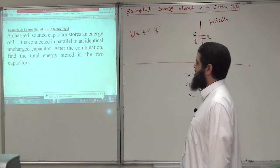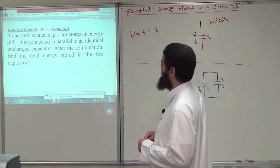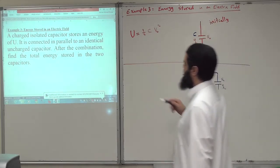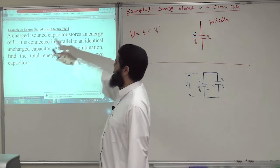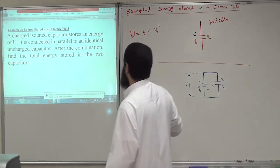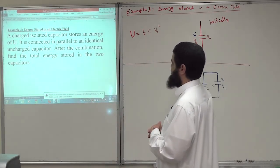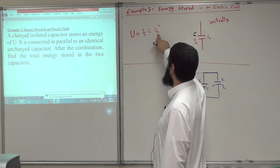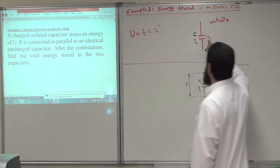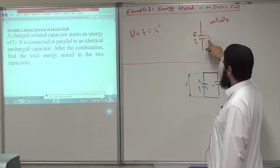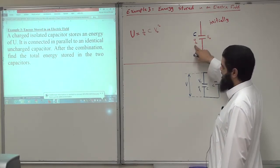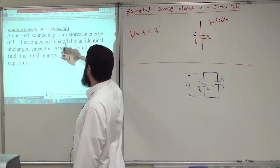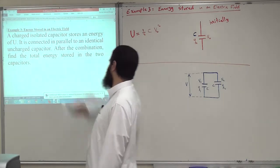This is the third example about energy stored in a capacitor. A charged isolated capacitor — isolated meaning it is not connected to any other device — stores an energy U, where U equals one half C V0 squared. It was at a potential difference V0 carrying charge Q0. After that, it is connected in parallel to an identical uncharged capacitor.